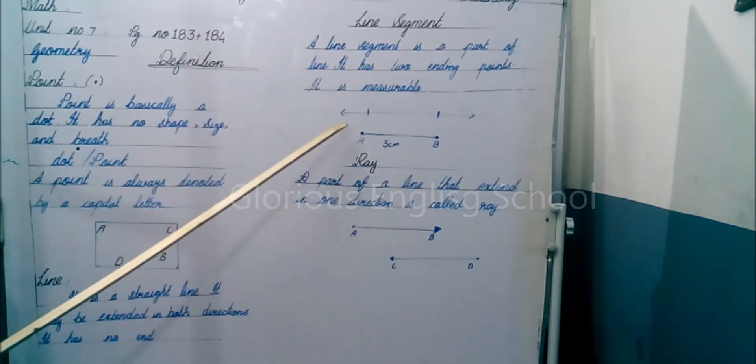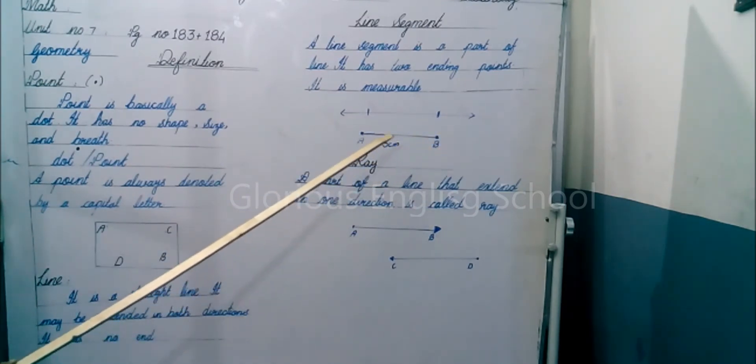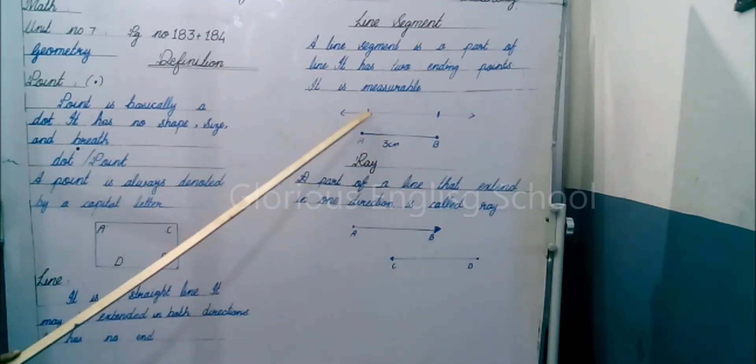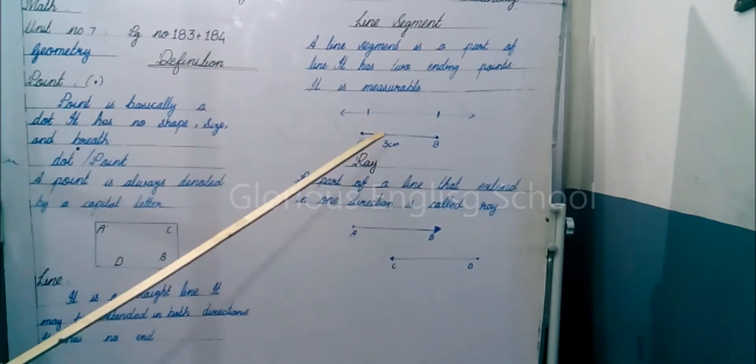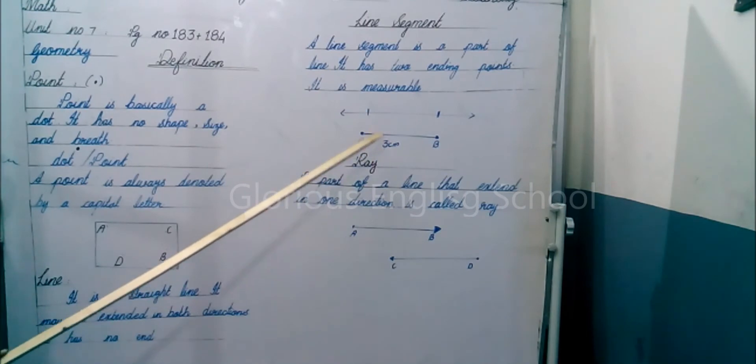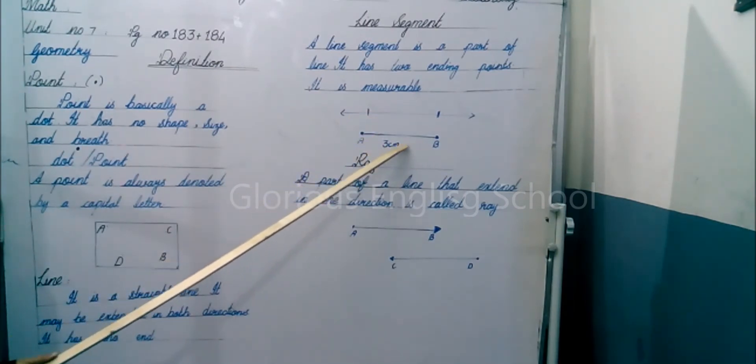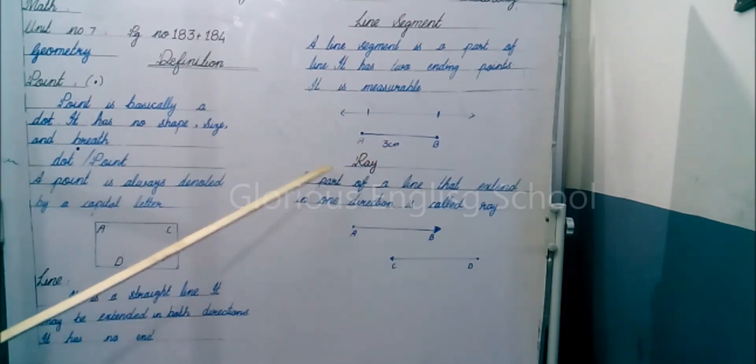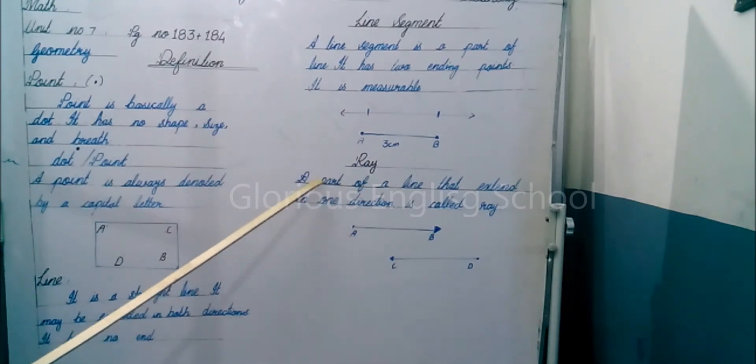For example, if you have a line, you can increase it as much as you want. But if the teacher tells you to draw a line of three or four centimeters, you will draw a line with your ruler. This is a line segment.